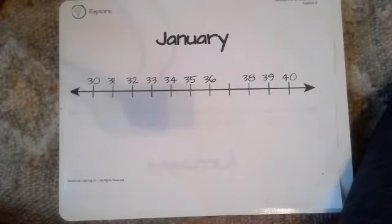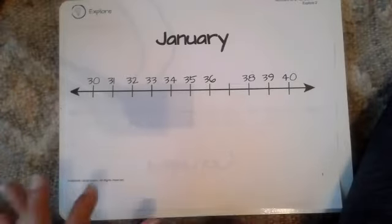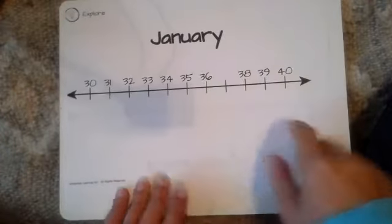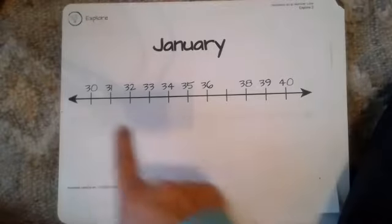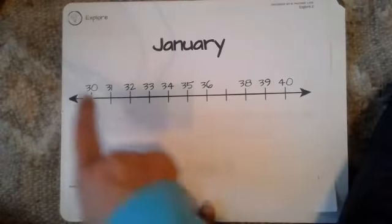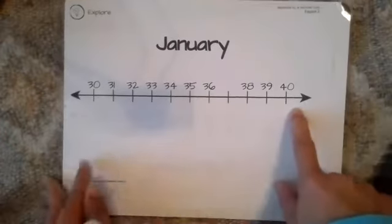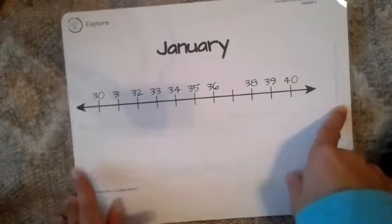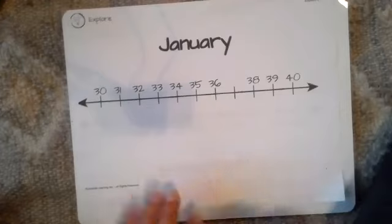Last week we looked at open number lines — those are the number lines that didn't have any tick marks. But now we're going to look at number lines with tick marks. These have the lines, and we're going to look at these and see what they're counting by on each tick mark.